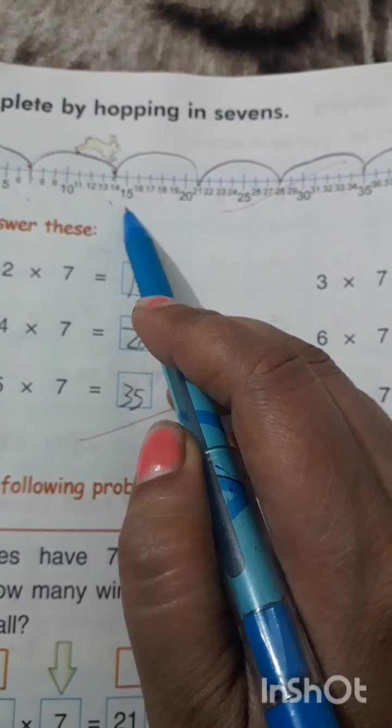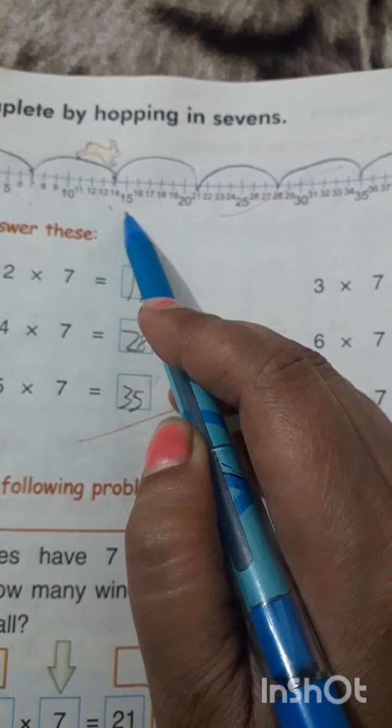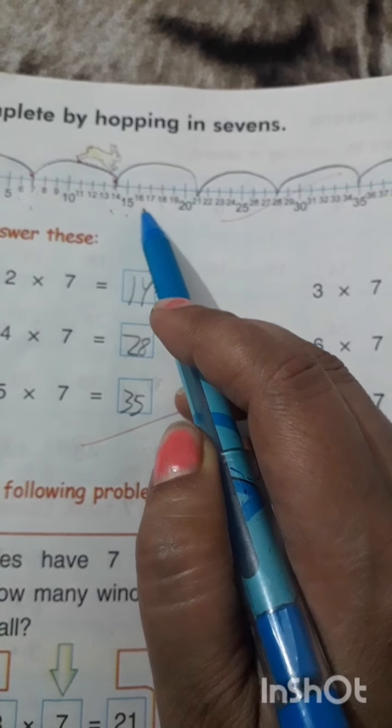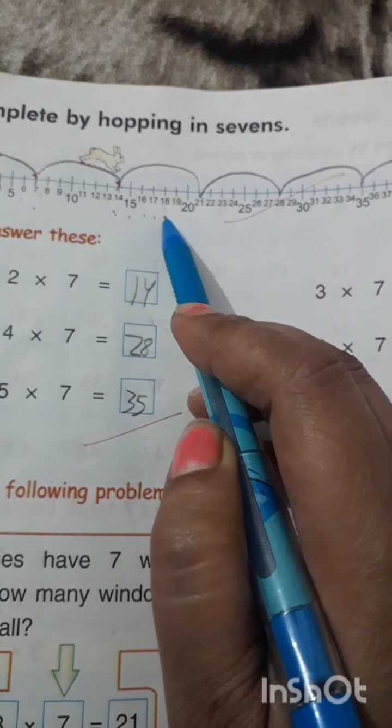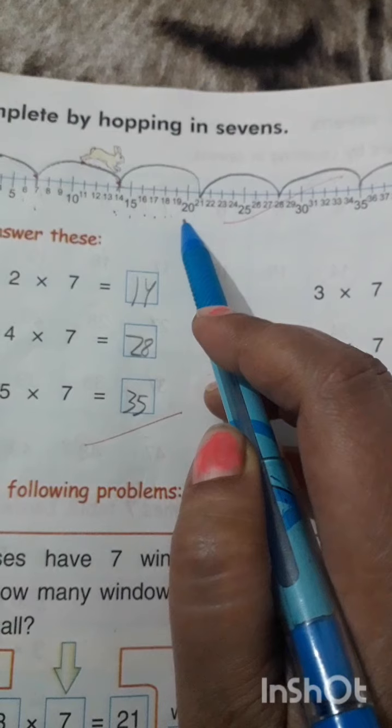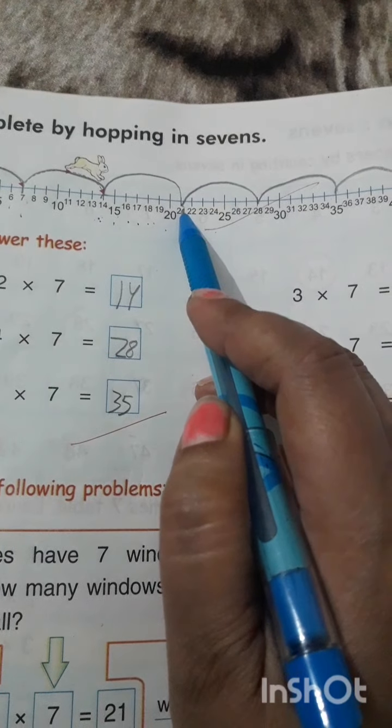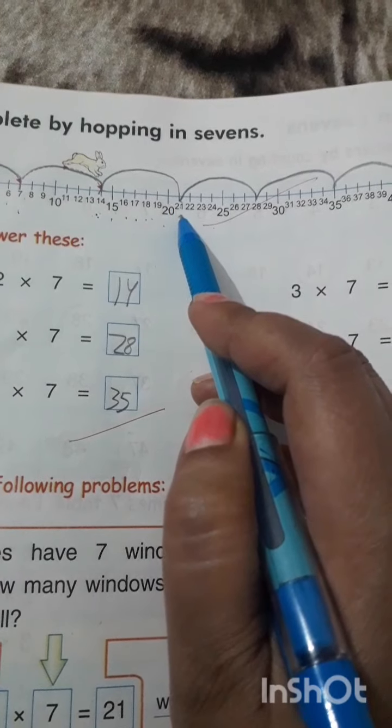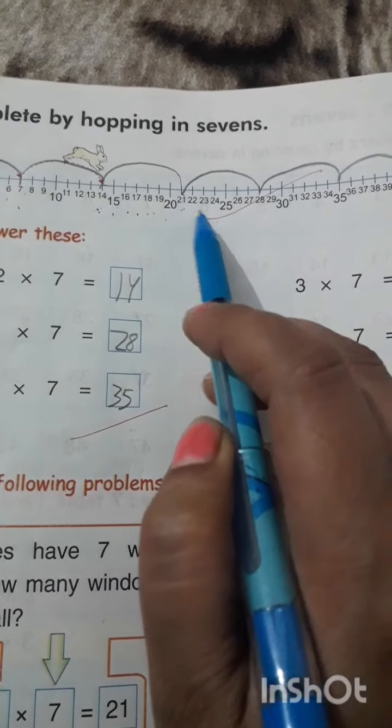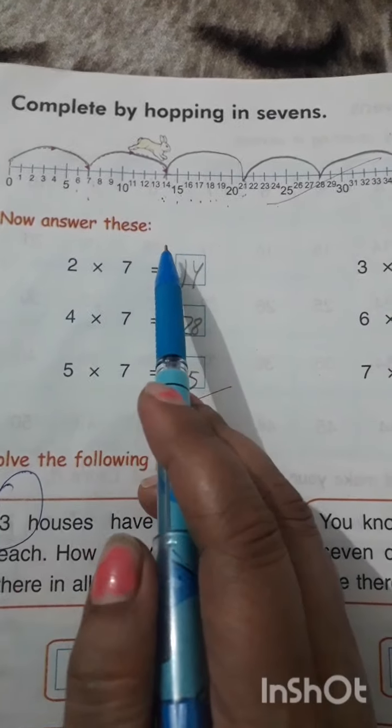Then we will skip 15, 16, 17, 18, 19, 20. Then he will jump on 21. Follow this pattern. Now answer these.